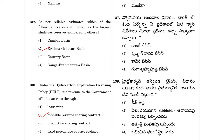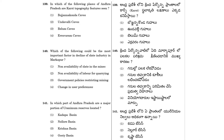Question 139: In which of the following places of Andhra Pradesh are karst topography features seen? Answer is 139. Question 140: Which of the following could be the most important factor in the decline of the slate industry in Markapur? The reason is a change in user preferences. So the answer is 140.